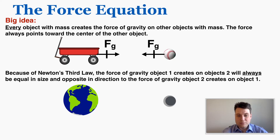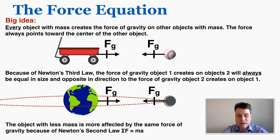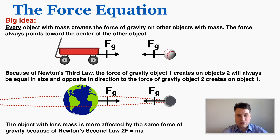Students often assume larger objects create larger forces of gravity on smaller objects. For example, if the moon puts the same force of gravity on earth that the earth puts on the moon, why does the moon orbit the earth? The answer is that because the earth has much more mass, Newton's second law means the object with less mass is more affected by the same force. The moon and earth put the exact same force on each other — the difference is in their masses.